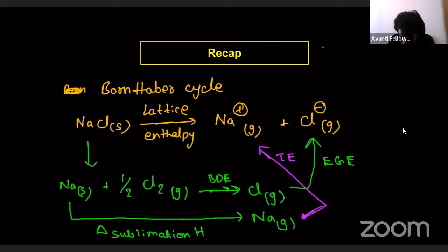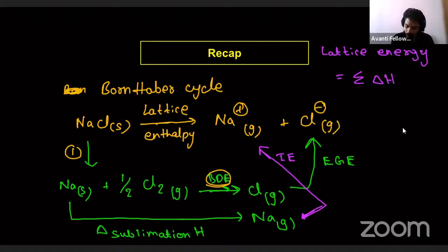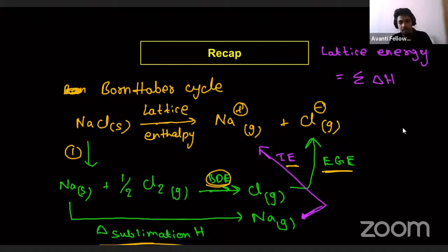Lattice energy is equal to the summation of all the steps: enthalpy of decomposition, plus atomization enthalpy of half a mole of chlorine gas, plus electron gain enthalpy of chlorine, plus sublimation energy of sodium, plus ionization energy. If we sum up all these energies, we get lattice energy. This is what we discussed in the last class.